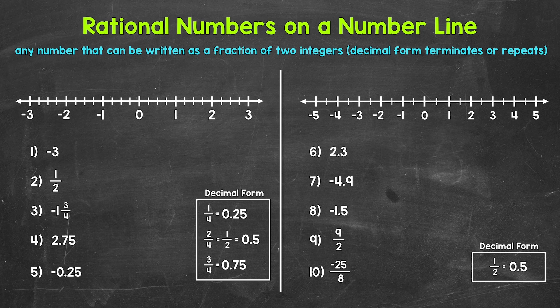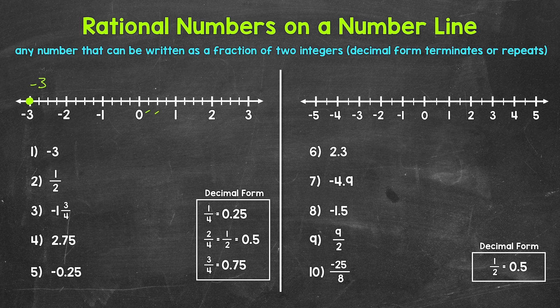This number line shows fourths, just like from the first section. For number one, we need to graph negative three, which is to the left of zero — negative three is right here. For number two, we have one half, which is positive, so we go to the right of zero. One half is between zero and one: one fourth, two fourths (one half), three fourths. So one half is right here.